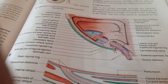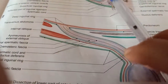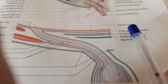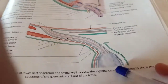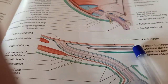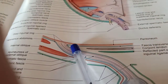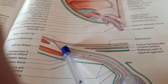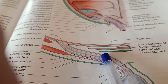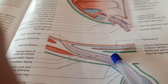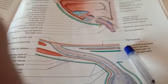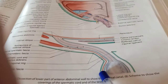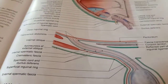In the inguinal canal video I showed the spermatic cord covered with spermatic fascia. The fascia transversalis forms the internal spermatic fascia. You can see in the diagram — the blue color is fascia transversalis, and as it goes down it covers the spermatic cord and forms the internal spermatic fascia.